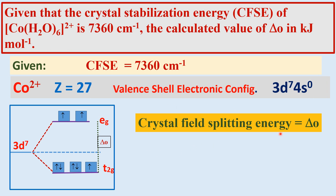Δ₀ is the crystal field splitting energy — the energy gap between the T2g orbitals and the Eg orbitals.